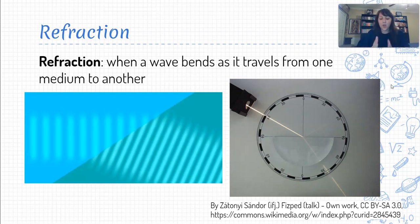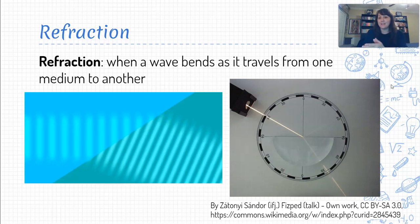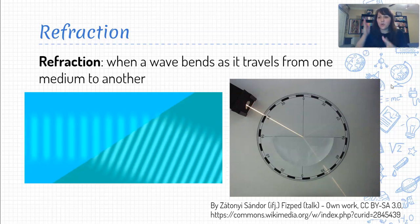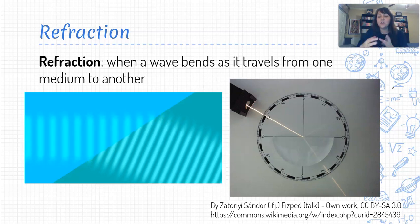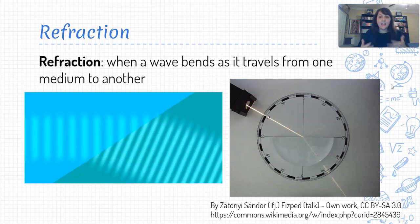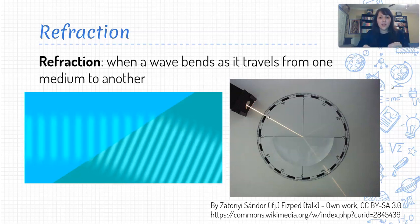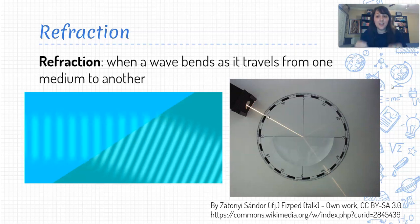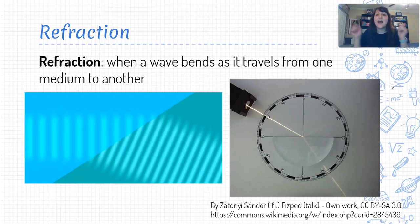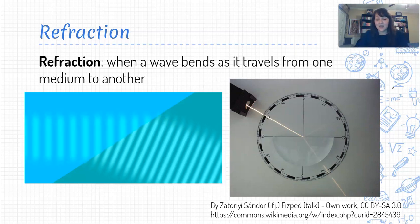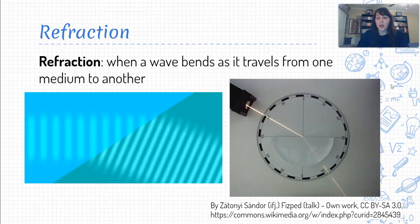Okay, and refraction occurs when a wave bends as it goes from one environment to a different environment. Because as we mentioned before, the one thing that determines the speed of a wave is the medium that it is in, what is the material that it is traveling through.